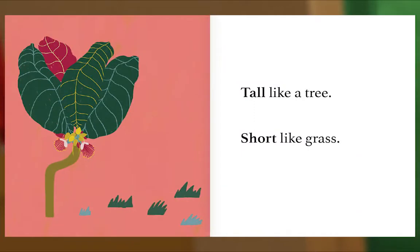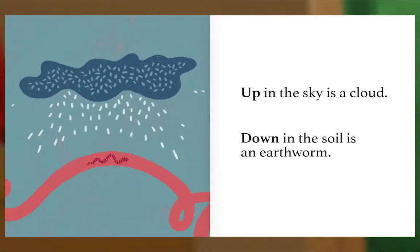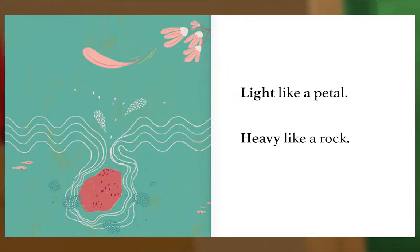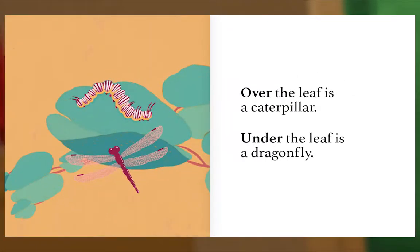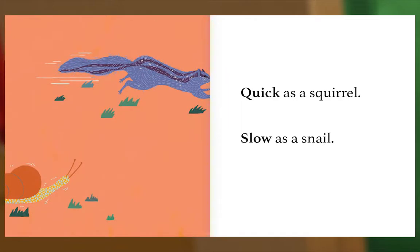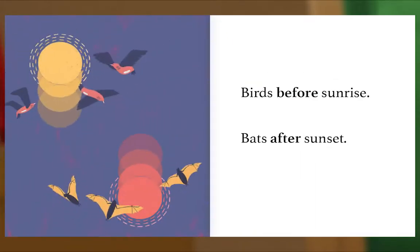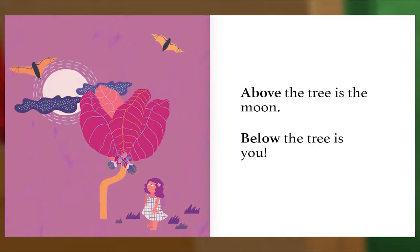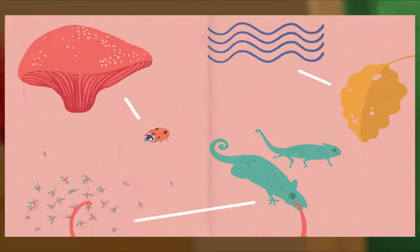Tall like a tree, short like grass. Up in the sky is a cloud, down in the soil is an earthworm. Light like a petal, heavy like a rock. Over the leaf is a caterpillar, under the leaf is a dragonfly. Quick as a squirrel, slow as a snail. Birds before sunrise, bats after sunset. Above the tree is the moon, below the tree is you. The End.